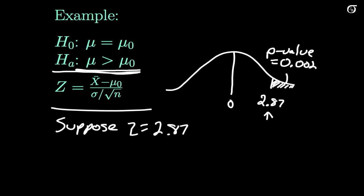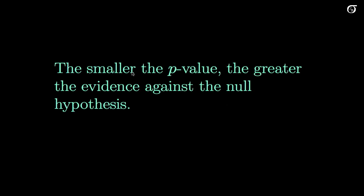Now, what does that actually mean? Well, in loose terms — but very important — if our p-value is really, really small, that's going to give us lots of evidence against the null hypothesis, because values way out in the right tail are going to provide evidence against the null hypothesis and give us evidence that mu is actually greater than mu-naught. So, the smaller the p-value, the greater the evidence against the null hypothesis.